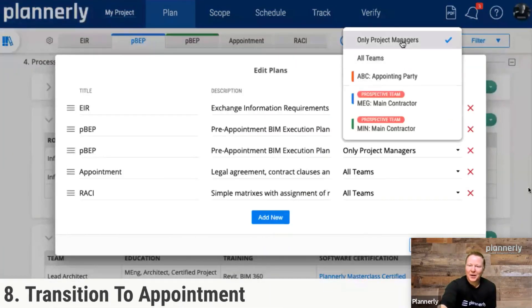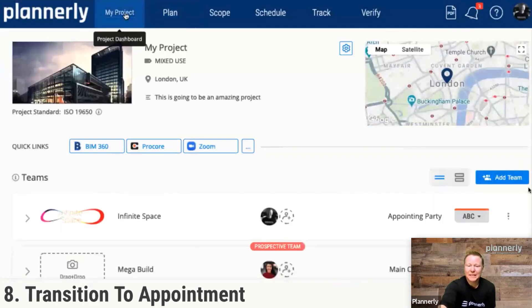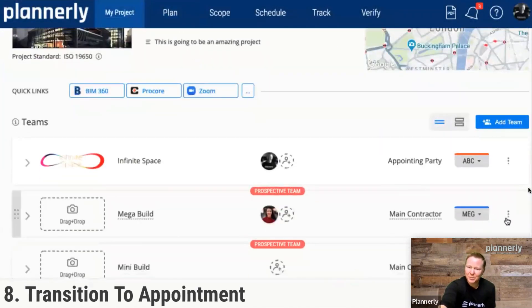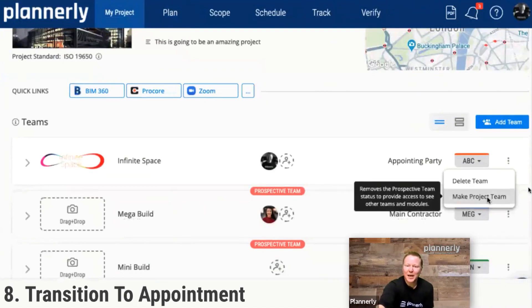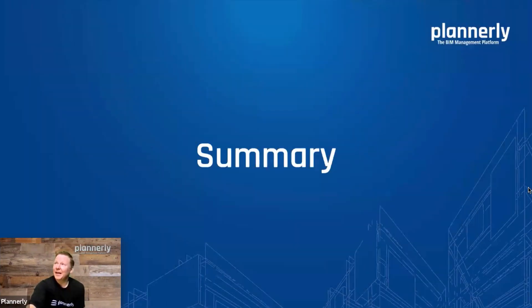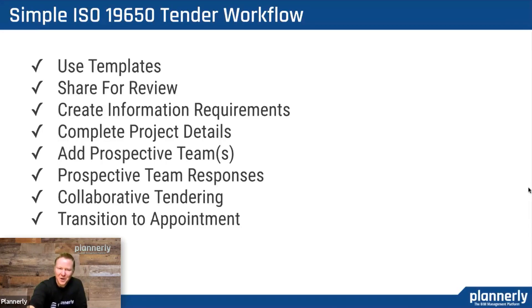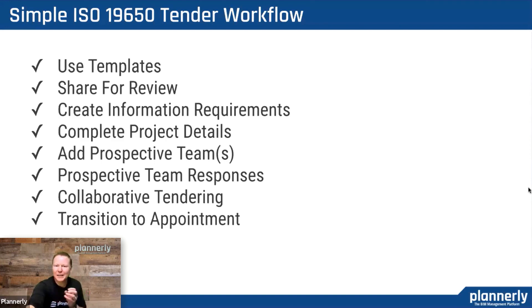And then, as we are moving to the appointment phase, we are removing certain teams and upgrading others to become project teams, transitioning to that appointment so that everyone can be part of that team. To summarize: how your teams can internally review those templates to make them your own, how teams can create information requirements — whether you are the appointing party in an exchange with an owner, or the prime in an engagement downstream. You can use this at any point in time to define your requirements and invite prospective teams so that they can respond. You can have a collaborative tendering process and then transition to that appointment phase.